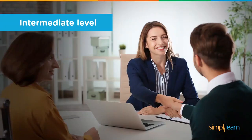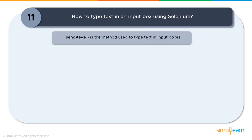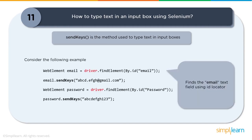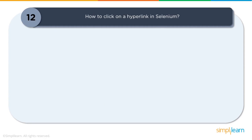Now let's look at intermediate level questions. Question eleven: How to type in an input box using Selenium? Selenium provides a method called sendKeys to insert a value into any input box. First, find the element using any of the eight locating techniques. Once found — for example, the email field — call sendKeys() and pass the string value you want to send, such as a Gmail ID. Do the same for the password field.